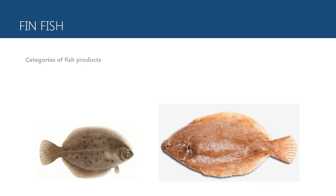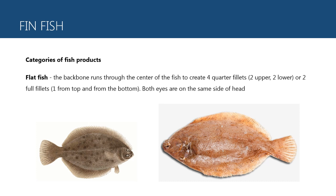Next, we have flatfish. The backbone runs through the center of the fish to create four quarter fillets — two upper, two lower — or two full fillets: one from top and one from bottom. Both eyes are on the same side of the head. Examples: flounder and solefish.